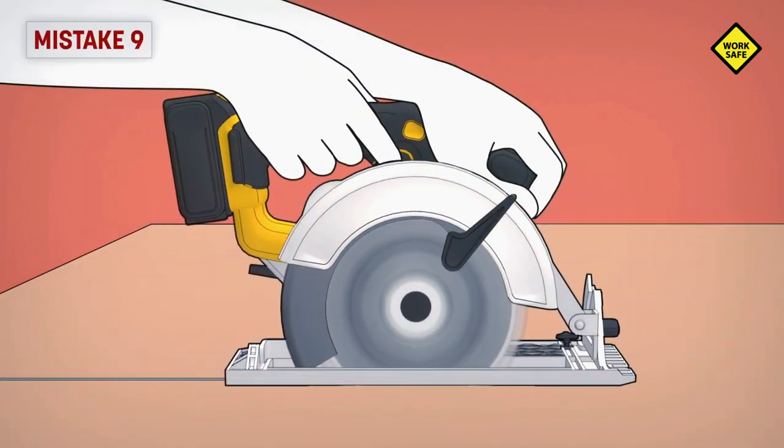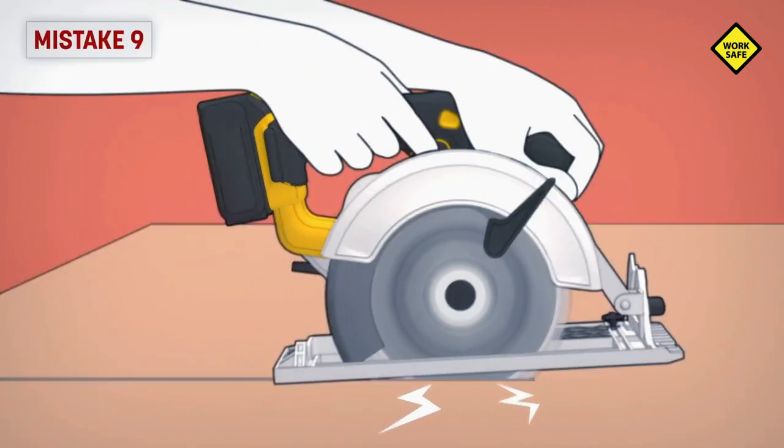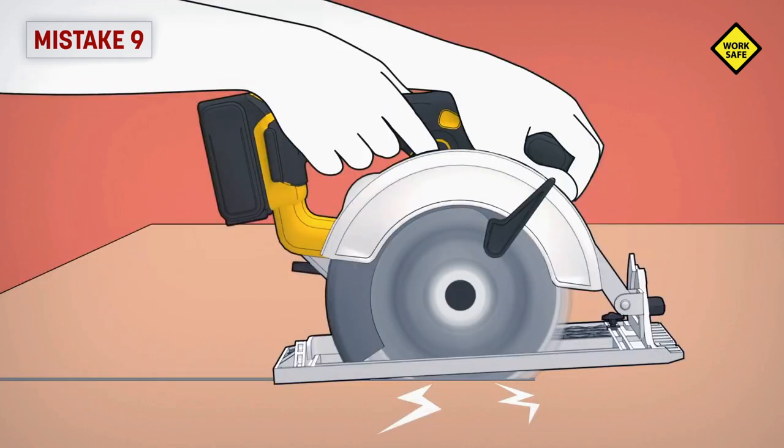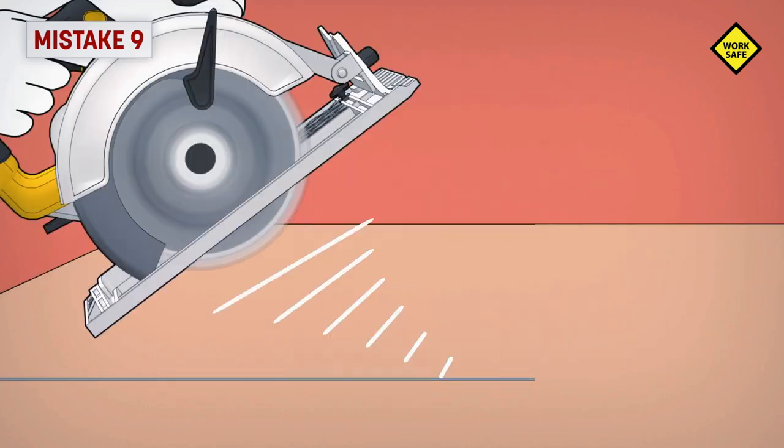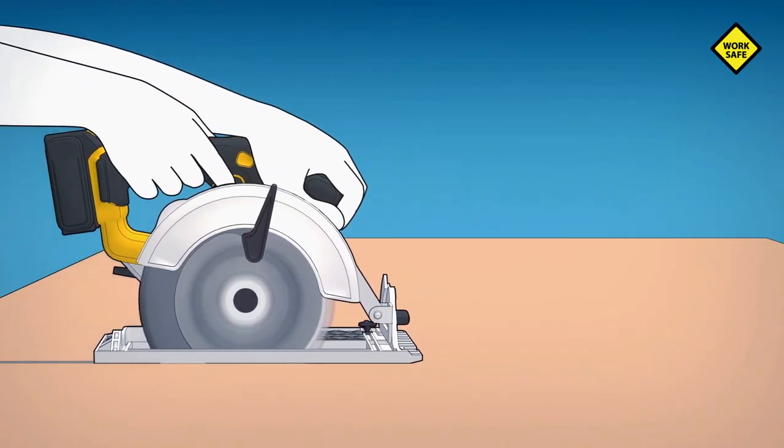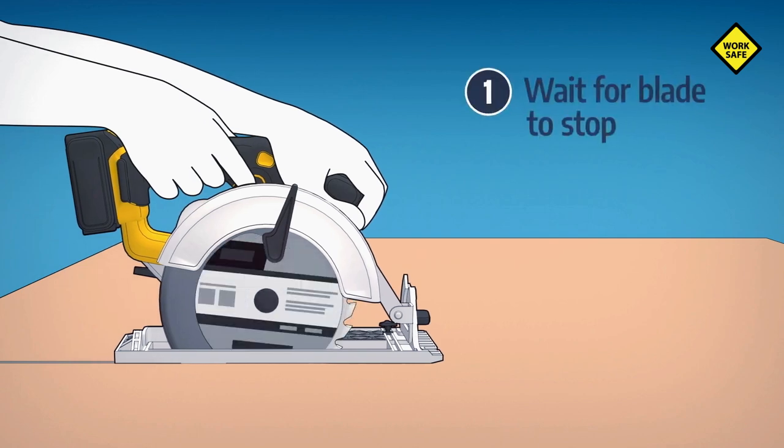Mistake 9: Removing the saw from the workpiece while the blade is moving. If the blade is still moving, it can dig into the wood, causing the blade to climb out of the kerf and jump back at you. Always hold the saw still until the blade has stopped moving, then remove the saw.